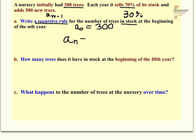So initially a sub 0 equals 300, and then each year it sells 70% of its stock. But I want a sequence rule that will give the number of trees in stock. So if it sells 70%, that means I'm going to have 30% in stock. So just be careful. That's a very tricky piece. So a sub n will equal 30%, and I'm going to write that as a decimal, of my previous year's number of trees, and then it's going to add 500.